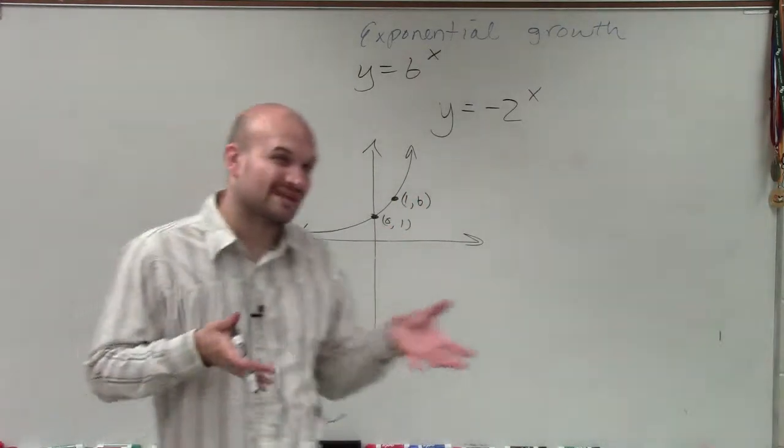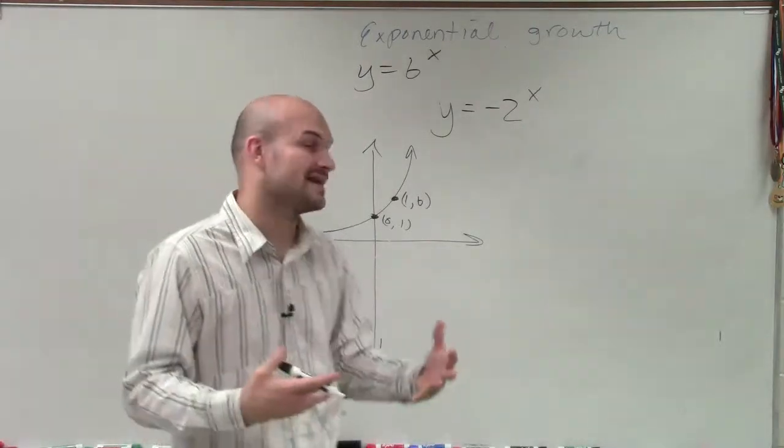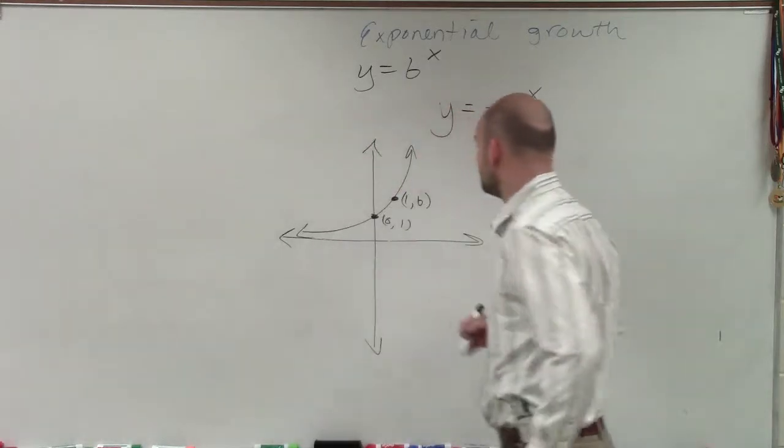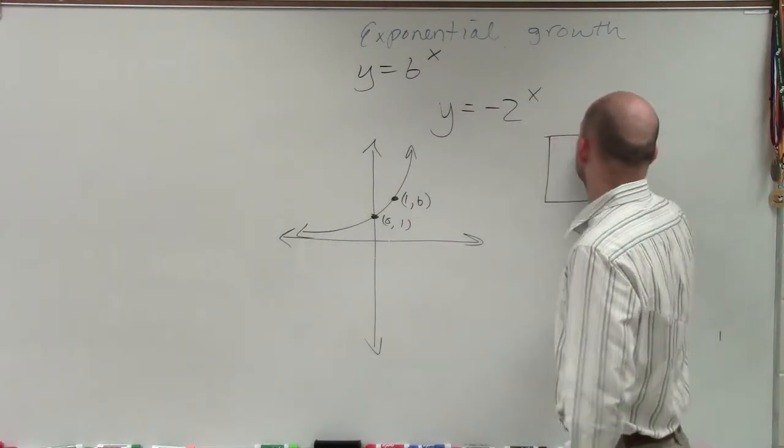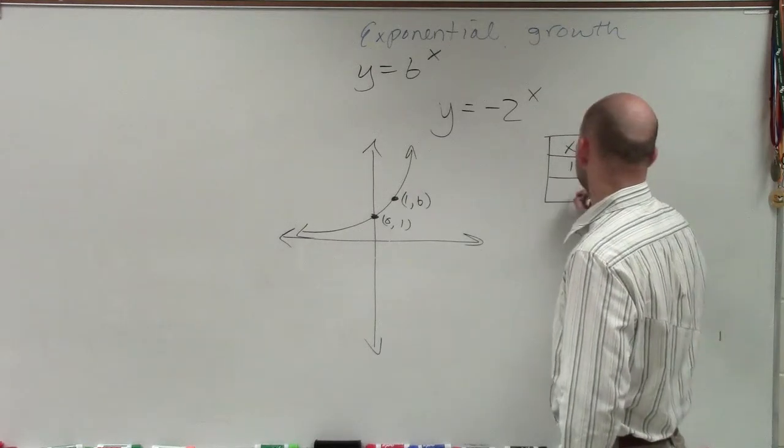What we can do is if we can just find these two points and then apply our transformations after that, then we'll be able to graph this. If I look at this, I need to evaluate a small little table for my x and y coordinates for 1 and 0.